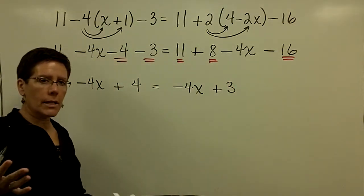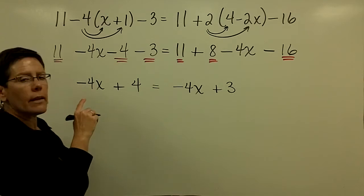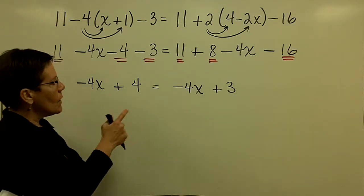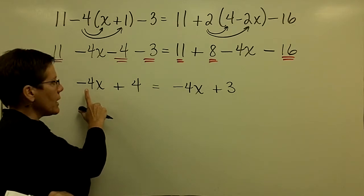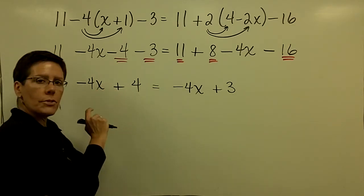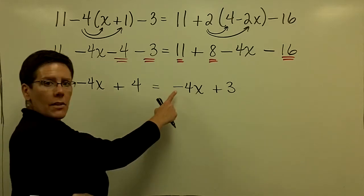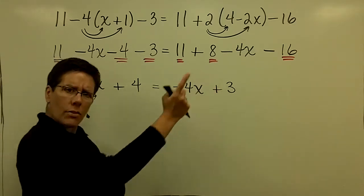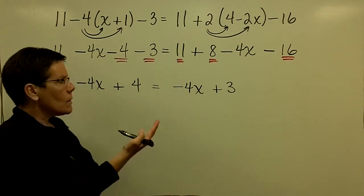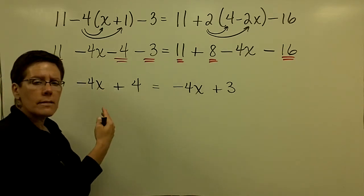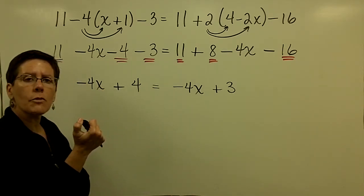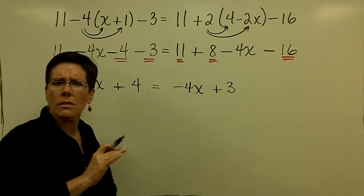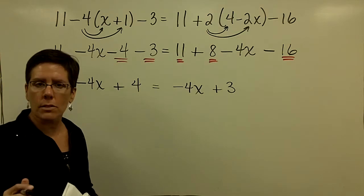And I look at this and I go, when can you ever find a number that in one case you can multiply negative 4 times that number and add 4 to it? And in the other case, also multiply a negative 4 times that number, but only add 3 to it. The left side has the same term in terms of a variable term, but it adds 4 in one case and adds 3 in the other case. And there's no way to ever find a solution for that.